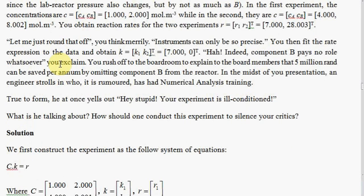In the problem here I write you've rushed off to the boardroom to explain this and all the savings that can be made by omitting component B from the process. In walks an engineer who it is rumored has had numerical analysis training, and at once he questions that experiment. He says the experiment is ill-conditioned. So what's he talking about?